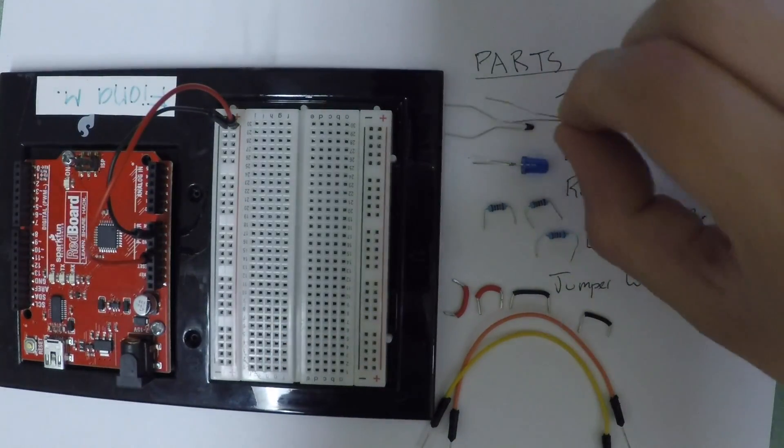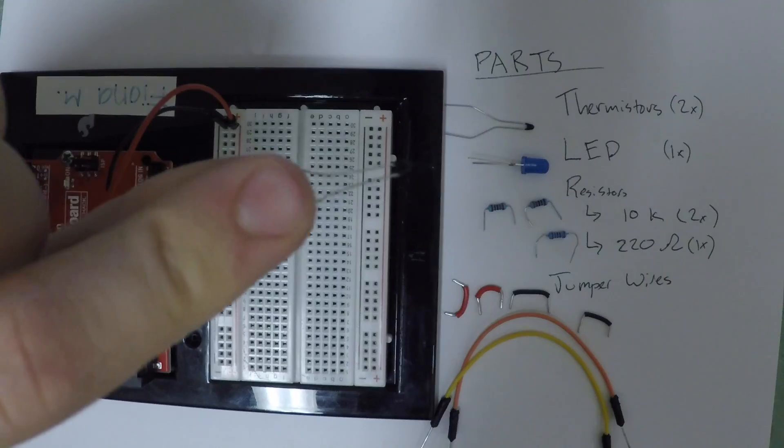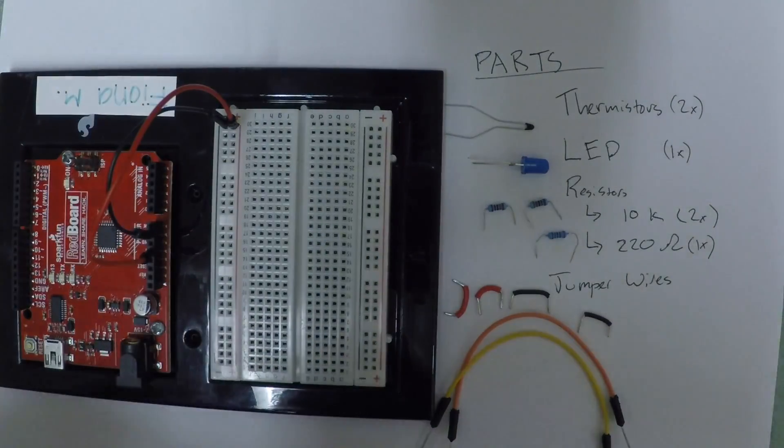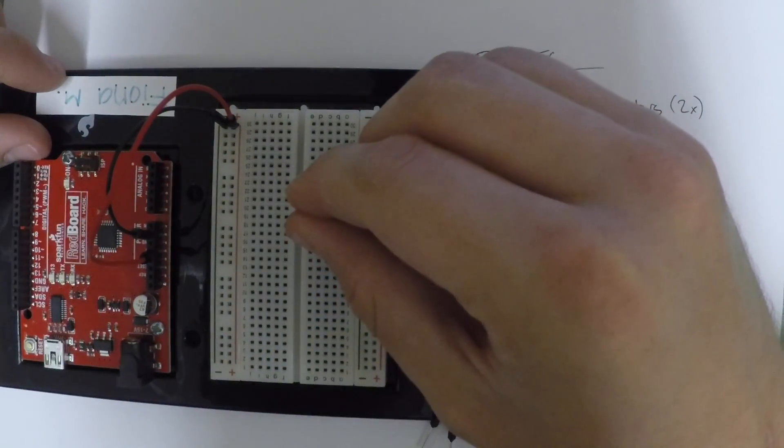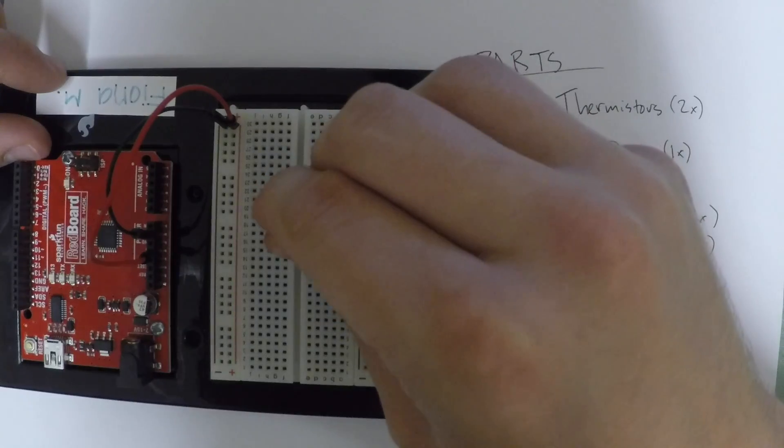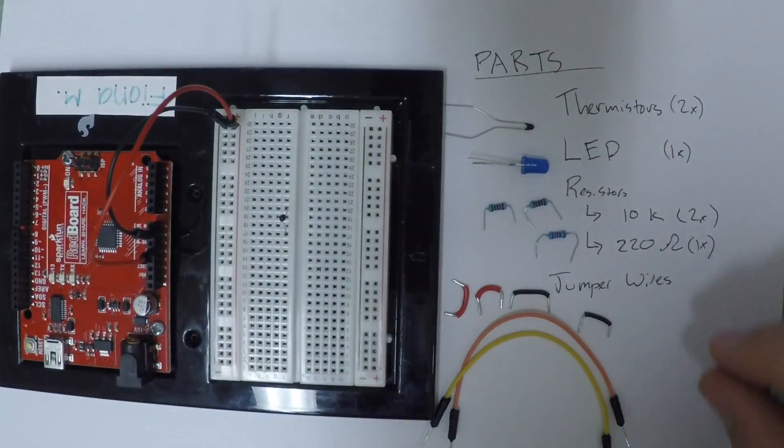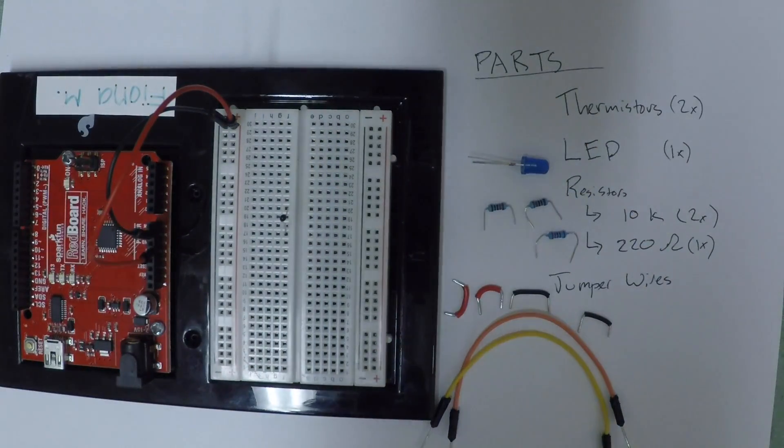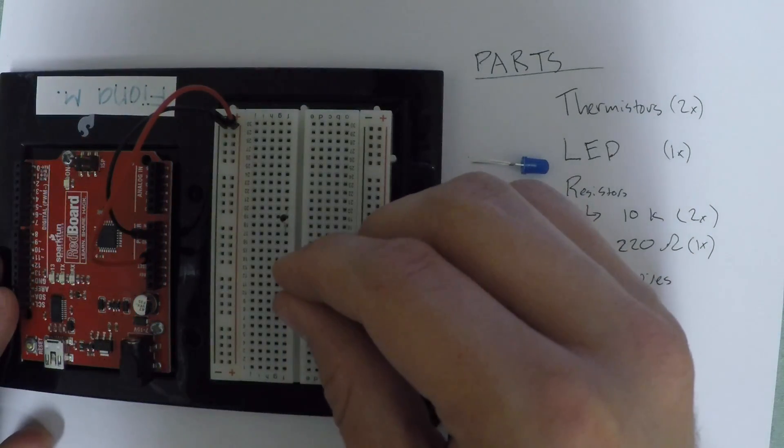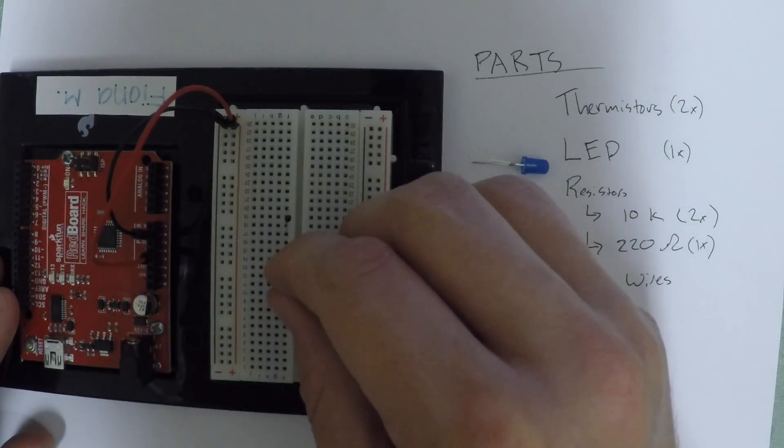Now we're going to construct the measurement part of our circuit, the two voltage dividers. First we'll place both thermistors down. I like to place them far away from the action in the board so I can pinch them or something to change the temperature.